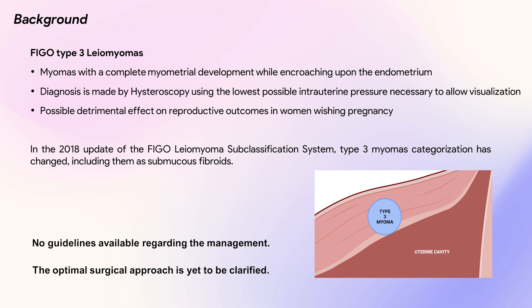Recently, there has been a growing interest in type 3 myomas due to their potential negative impact on reproductive outcomes in women who wish to become pregnant. Type 3 myomas are characterized by a complete myometrial development while encroaching upon the endometrium, and are diagnosed through hysteroscopy employing the minimum intrauterine pressure necessary for visualization.